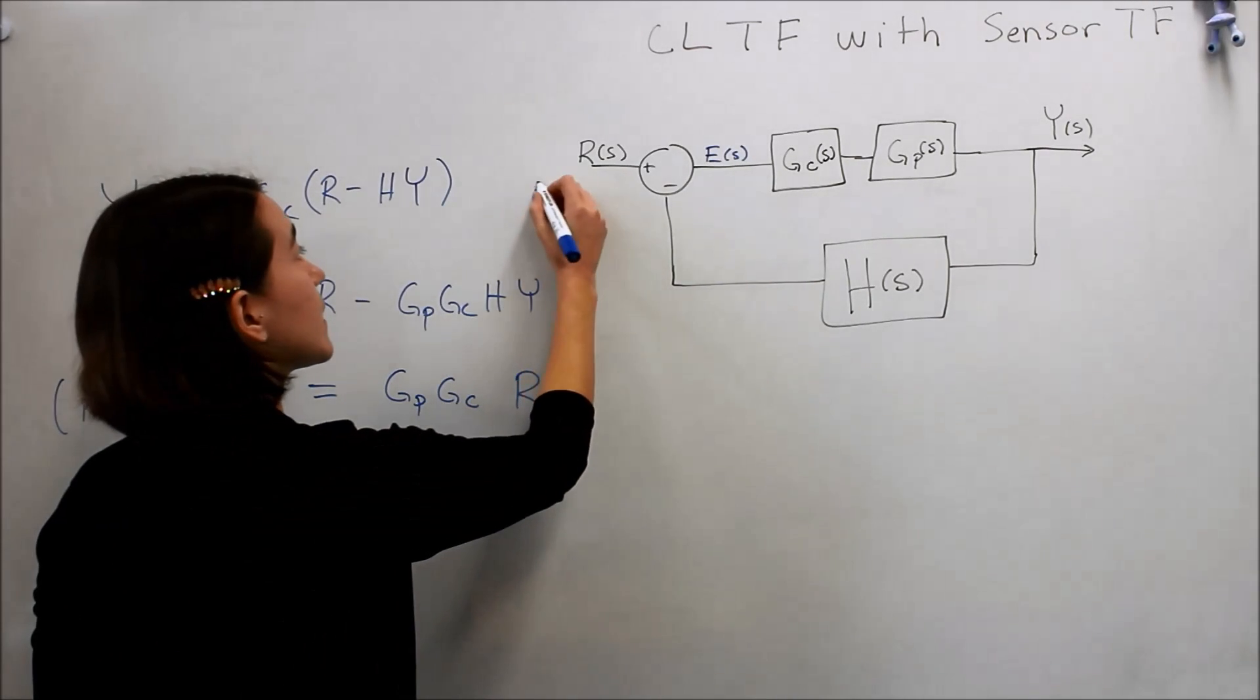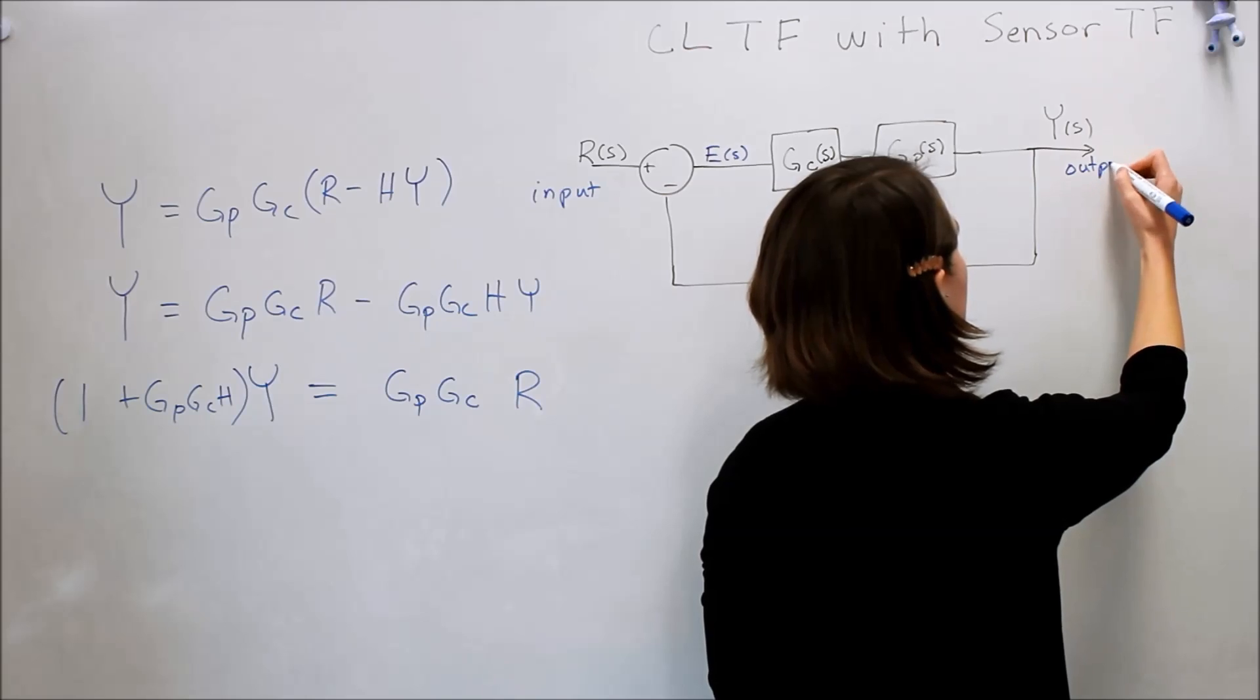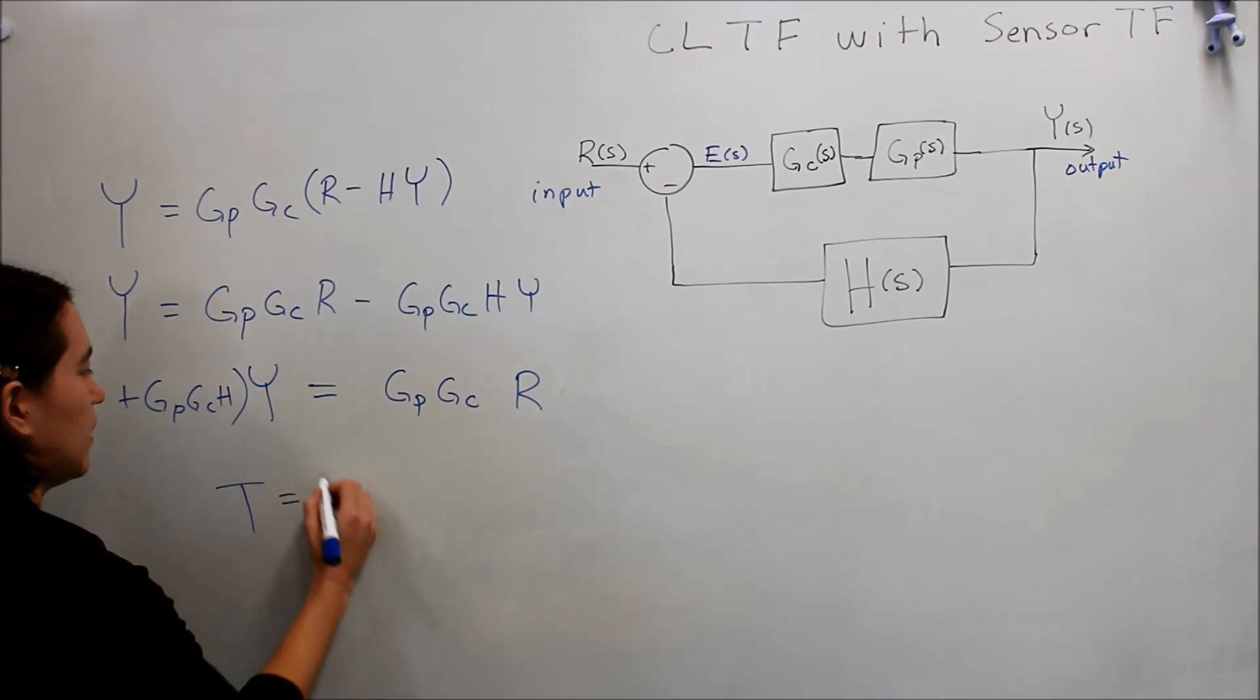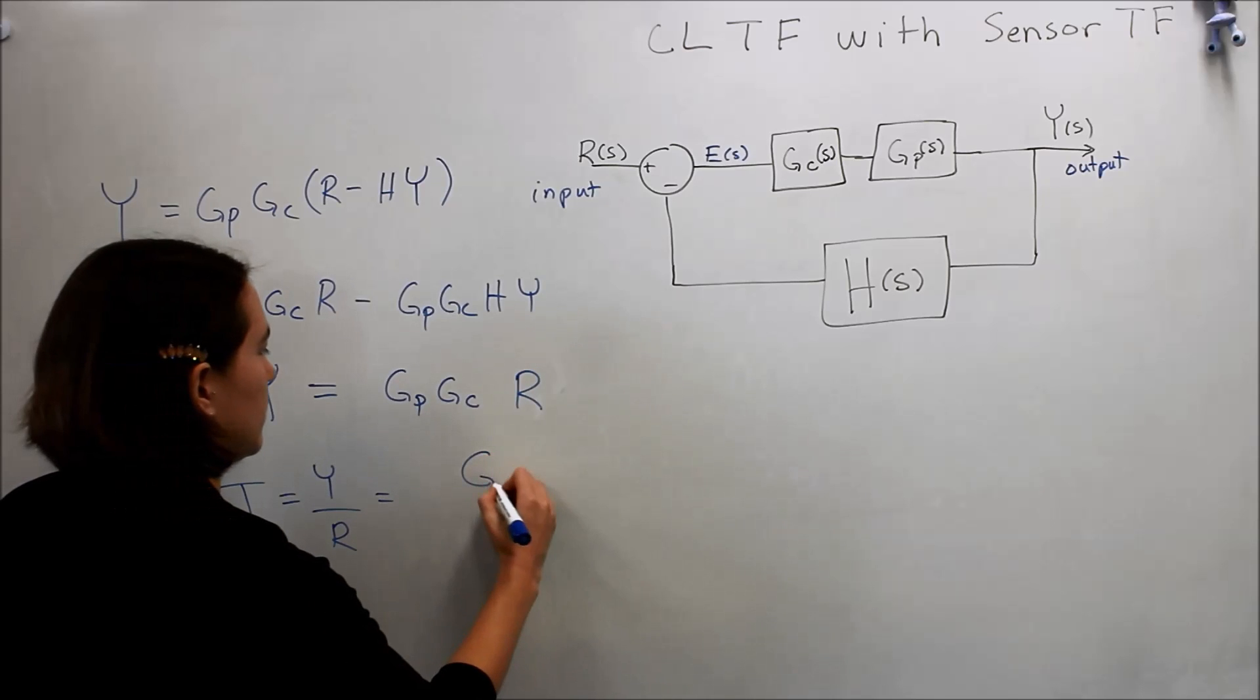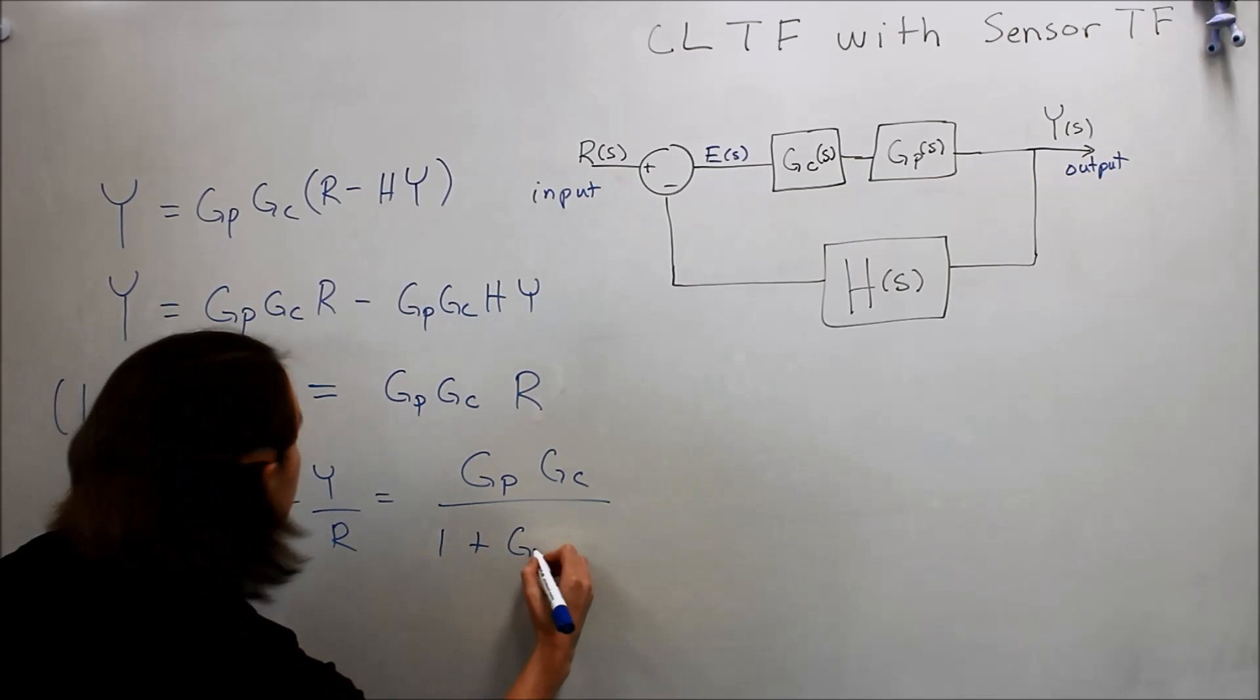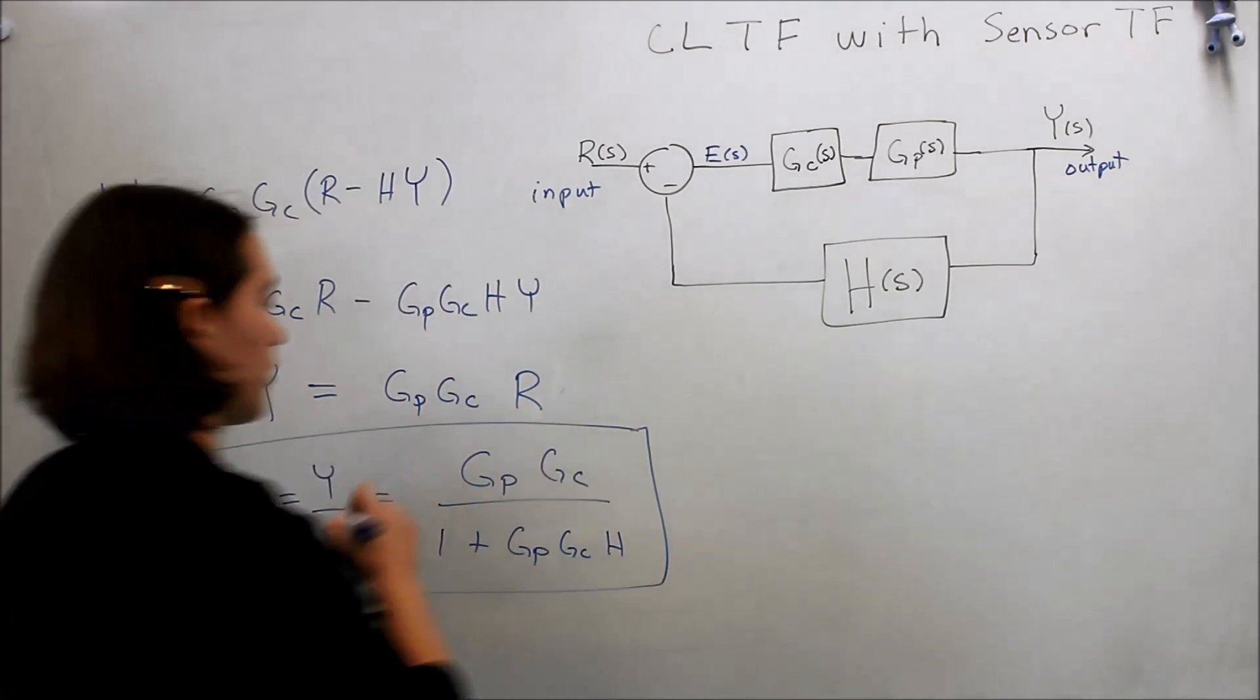Remember r is our input in the closed-loop function and y is our output. For our transfer function, we're going to use capital T again. Y over r equals gp gc over one plus gp gc h. So this is our transfer function in this general form.